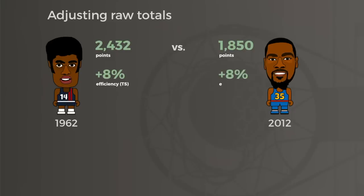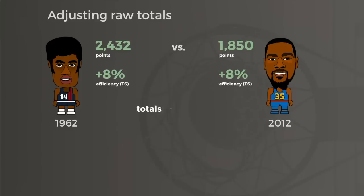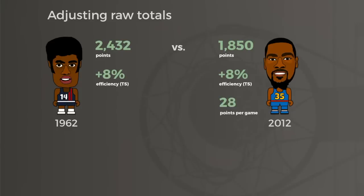Based on total points and efficiency, Robertson looks like a vastly superior scorer. Of course, the traditional way to gauge scoring volume in basketball isn't to look at season totals like this — these aren't home runs in baseball — but instead to convert them to per-game averages as a way to level the playing field. In this case, Durant averaged 28 per game and Oscar 31.